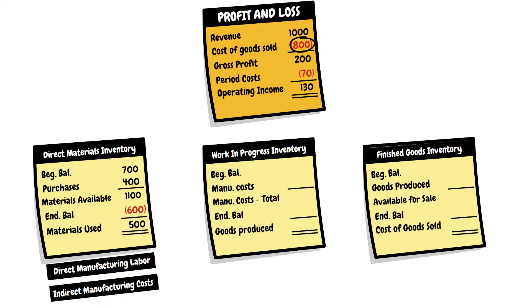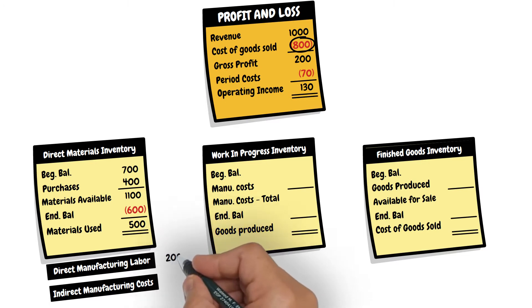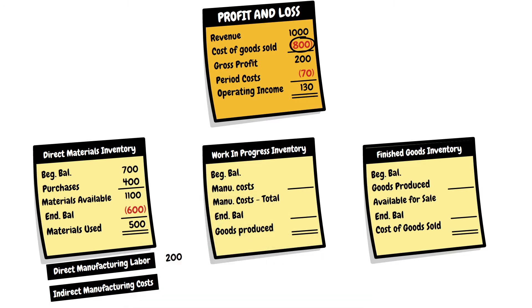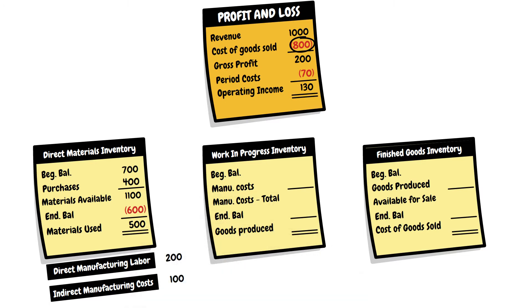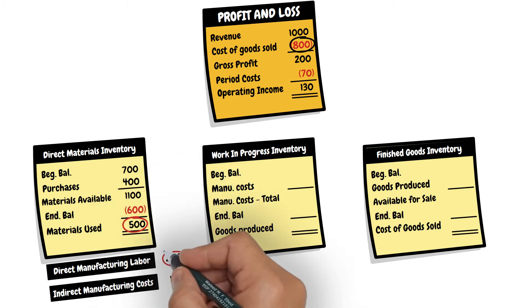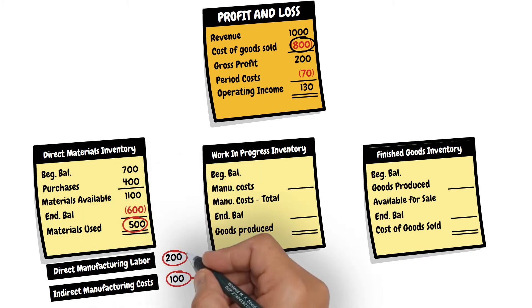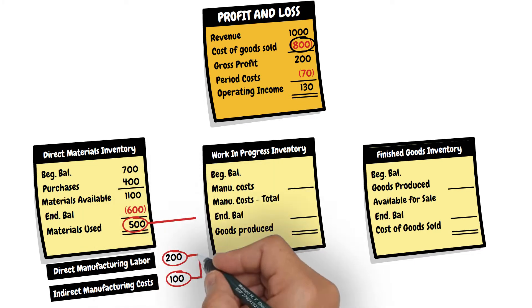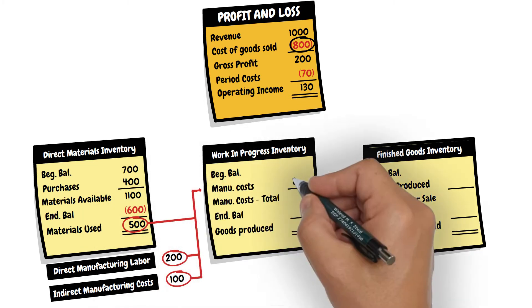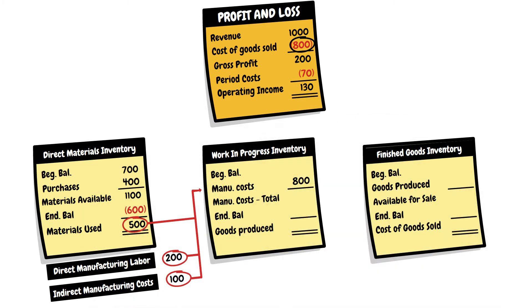Direct manufacturing labor costs used in production amounted to 200, and the indirect manufacturing costs amounted to 100. The sum of these three gives us the total manufacturing costs incurred during the year — 800 — which is booked here in the work-in-progress inventory account.